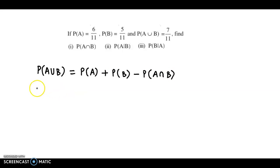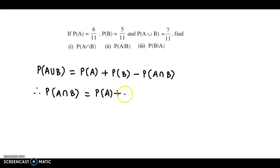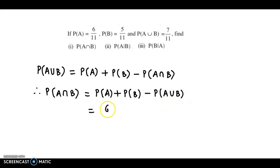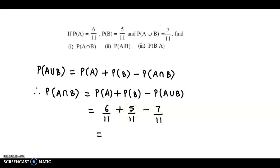So if we just rearrange the terms, we get probability of A intersection B. We transfer this onto the left hand side and A union B on the right hand side. This is equal to probability of A plus probability of B minus probability of A union B. Upon substitution, we get 6 by 11 plus 5 by 11 minus 7 by 11. Now 6 plus 5 is 11, minus 7, so that's 4 by 11.